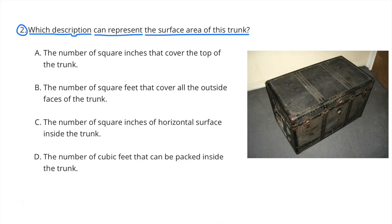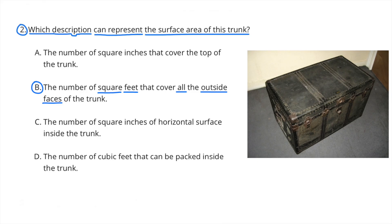Number 2. Which description can represent the surface area of this trunk? A: the number of square inches that cover the top of the trunk. B: the number of square feet that cover the outside faces of the trunk. C: the number of square inches of the horizontal surface inside the trunk. Or D: the number of cubic feet that can be packed inside the trunk. The answer is B: the number of square feet that can cover all the outside faces of the trunk.